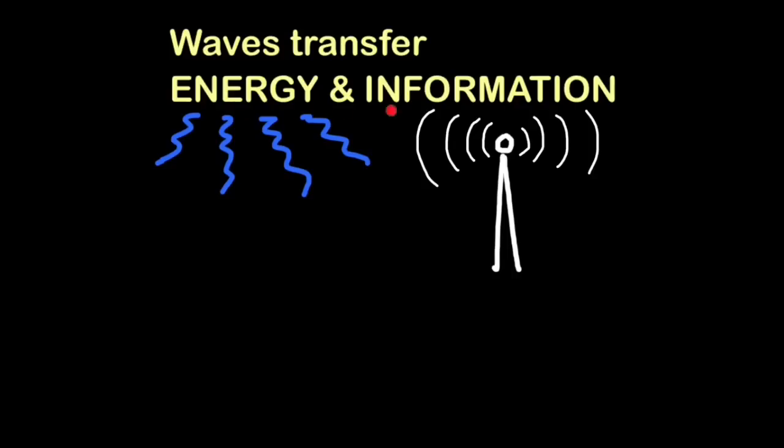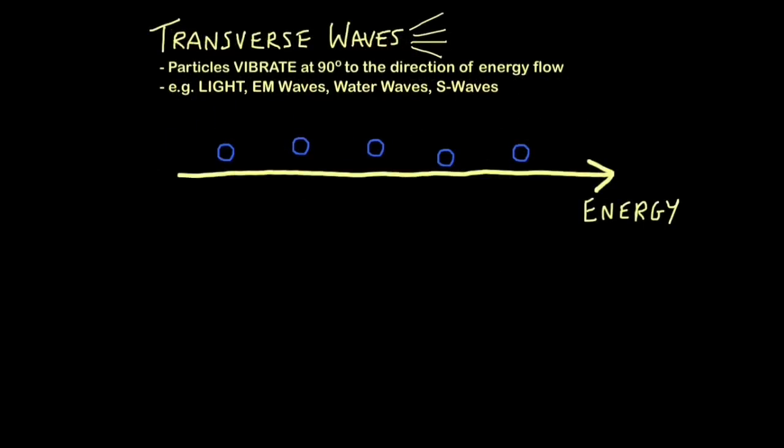One other essential point is waves transfer energy and information, not matter. This has come up as a multiple choice question quite a few times in an exam. People normally remember energy but they forget information. That's why we can use waves for mobile phone communication or satellite communication. So there are two types of waves.